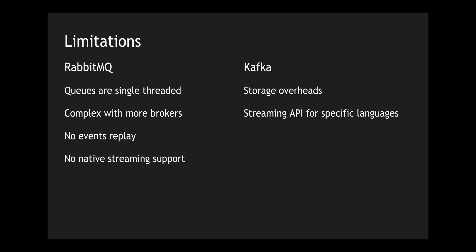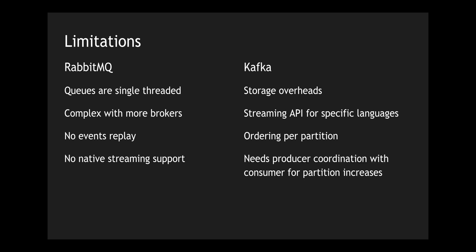Kafka also has limitations for the streaming API which are specific to JVM languages like Java, though many open source libraries are emerging. Ordering in Kafka is restrictive to a partition, so ordering across events and partitions requires leveraging joins — you cannot do that directly out of the box. Finally, you must coordinate with the producer for increasing the number of partitions based on event types — that decision cannot be made without involving the producer.